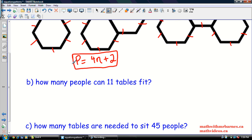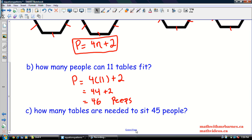So how many people can sit at 11 tables? Well, the number of tables is n. So this is just like the last question. We go four times 11 plus two. So that's 44 plus two. So 46 people. 46 peeps can sit at 11 tables.